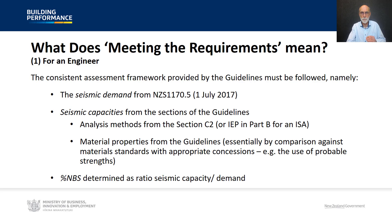Examining what 'meeting the requirements' means through an engineering lens: the consistent assessment framework provided by the guidelines must be followed in terms of seismic demand from NZS 1170 Part 5 as at the commencement date of 1 July 2017, and seismic capacities from the applicable sections of the guidelines — derived from an analysis method from Section C2, or for an ISA an IEP in Part B, and the various material properties from the guidelines, typically by comparison against current material standards with appropriate concessions such as the use of probable strengths.